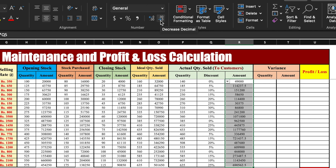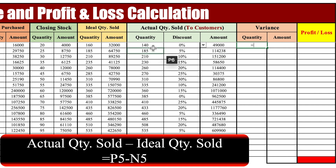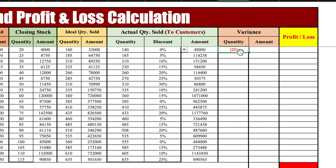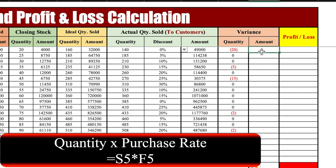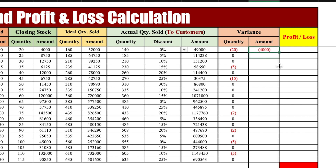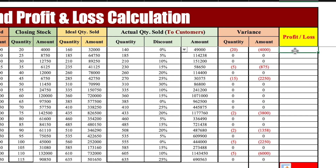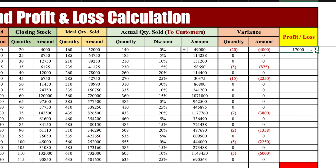Now we will calculate the variance. Variance equals actual quantity sold minus ideal quantity sold — there is a gap of 20. Drag down. For variance amount we take it on purchase rate: quantity into purchase rate — a gap of 4,000 is there in the first item. Drag down. For profit or loss: actual amount sold minus ideal amount. Drag down.